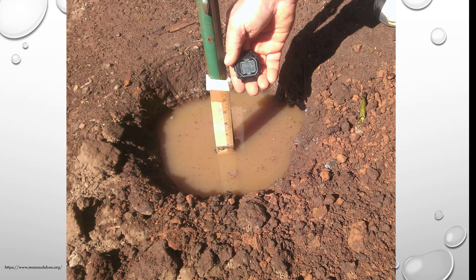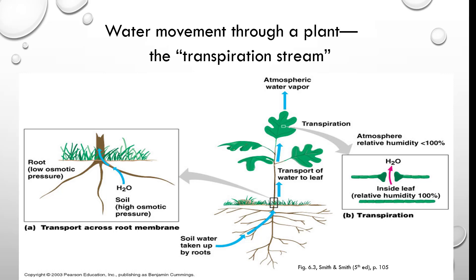We did the percolation test in class last year, though that's not going to happen this year. Water moves through the plant via the transpiration stream — it's like a straw that draws water up from the soil. There's low osmotic pressure inside the root and high on the outside, which pushes water into the plant and transports it to the leaf, where it is transpired and ends up as water vapor.